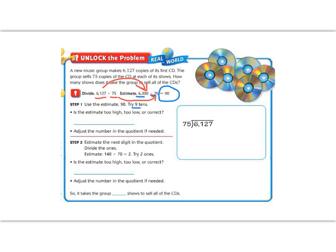So nine tens, let's multiply to check. 75 times 9, 9 times 5 is 45, 9 times 7 is 63 plus 4 is 67. So now we get 675. And look, we have 6,127. We're looking at the 612 to go into, and we have 675. So it's too high. So we need to adjust and go a little bit lower.